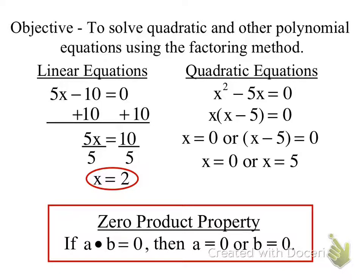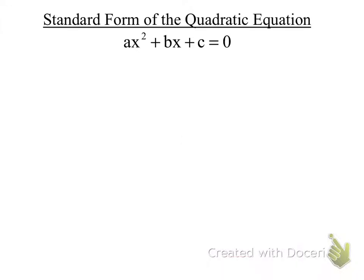If I had a cubic function, how many solutions do you think there might be? Three. Alright. So standard form of the equation is ax squared plus bx plus c, where a, b, and c are integers.